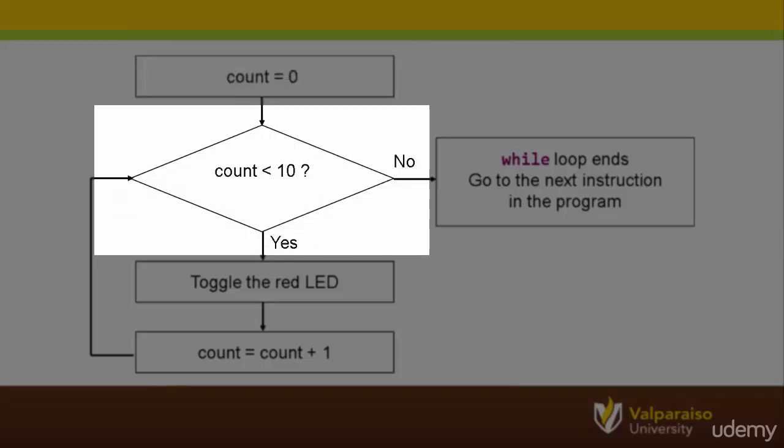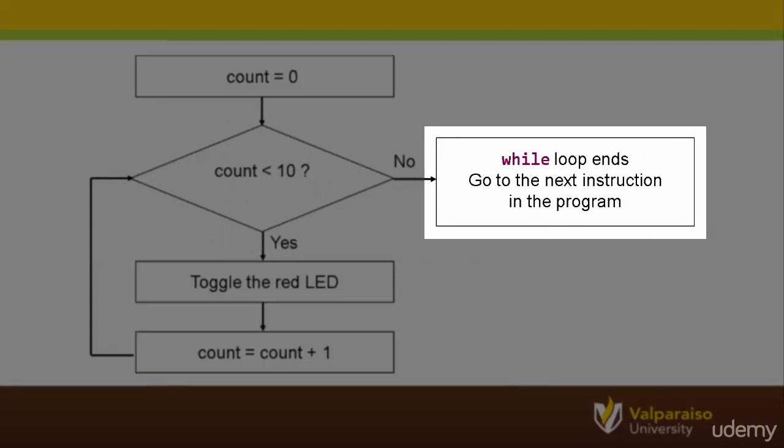Next, the while loop will test the control variable to see if it meets a specified condition. In this example, we test the control variable COUNT to see if it is less than 10. If there ever is a time where the control variable does not meet the specified condition, for example, COUNT is equal to 10, the while loop is done, and the program will move on to the next instruction.